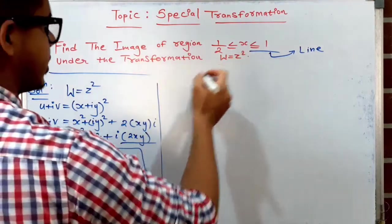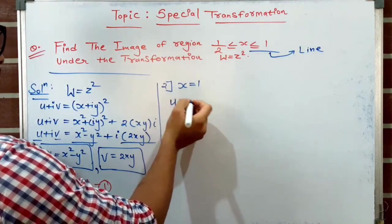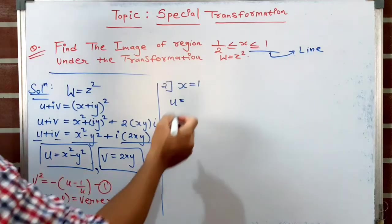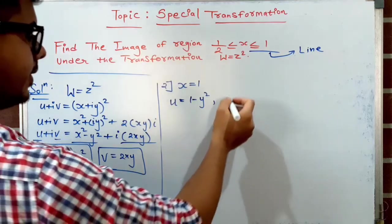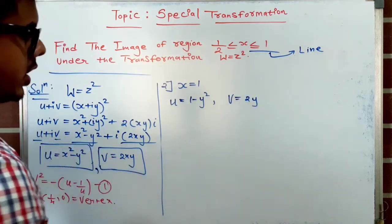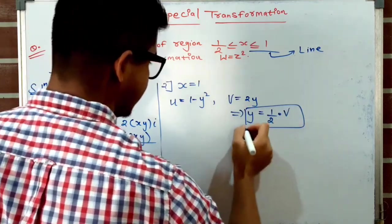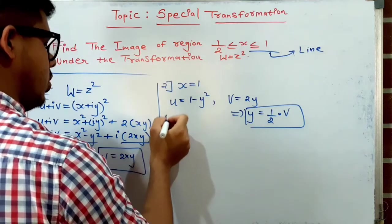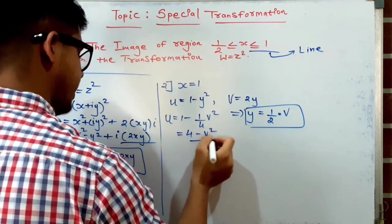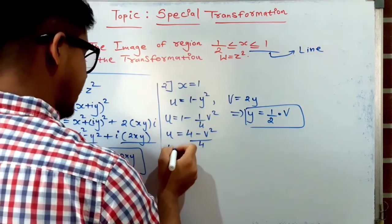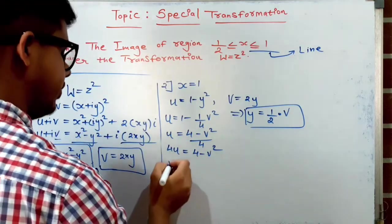When x = 1: u = 1 − y² and v = 2y. From v = 2y, we get y = v/2. Substituting into the equation for u: u = 1 − (v/2)² = 1 − v²/4, so 4u = 4 − v². Bringing v² to the left: v² = 4 − 4u.